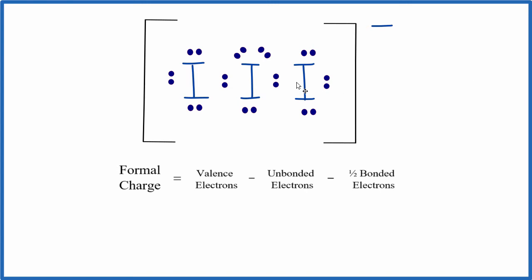So let's find the formal charge for this iodine, and then we'll do the next one here. So iodine here. Iodine has 7 valence electrons. It's in group 17, sometimes called 7a. So it has 7 valence electrons. Unbonded, we have 2, 4, 6.